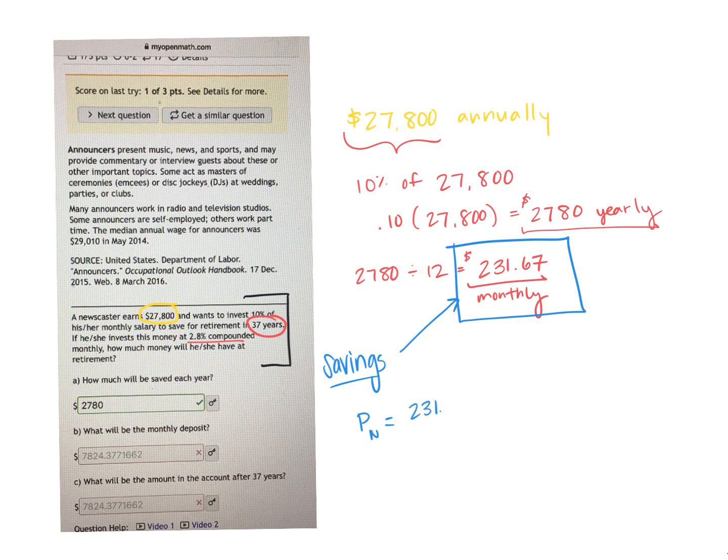So he's making the payment, $231.67, 1 plus our interest rate is 2.8%, so we'll write that as a decimal 0.028. He's doing this monthly, they're monthly payments, so it's going to compound monthly. And we're going to take this to, let's see, it'll be 37 years times 12. That's how many payments and compounds that he's going to have.